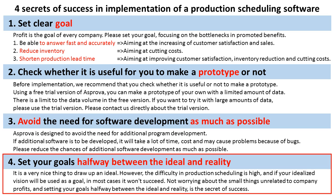Secret 4: Set your goals halfway between the ideal and reality. It is a very nice thing to draw up an ideal. However, the difficulty in production scheduling is high, and if your idealized vision is used as a goal, in most cases it won't succeed. Not worrying about small things unrelated to company profits, and setting your goals halfway between the ideal and reality, is the secret of success.